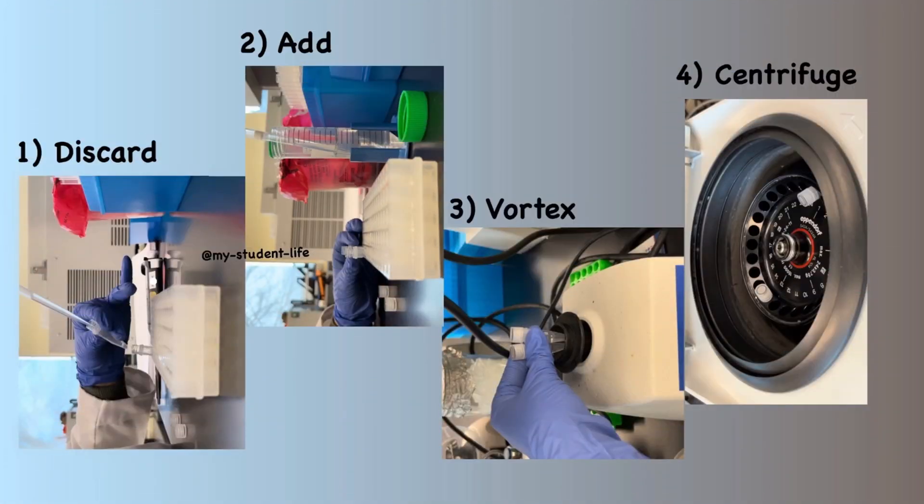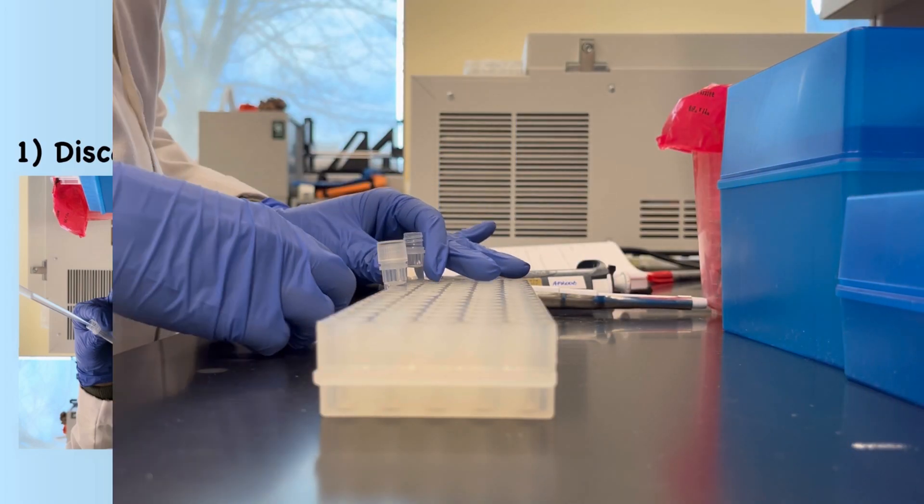After discarding the ethanol, add 1 ml of ethanol, vortex it, and centrifuge it again. This would be the last wash.